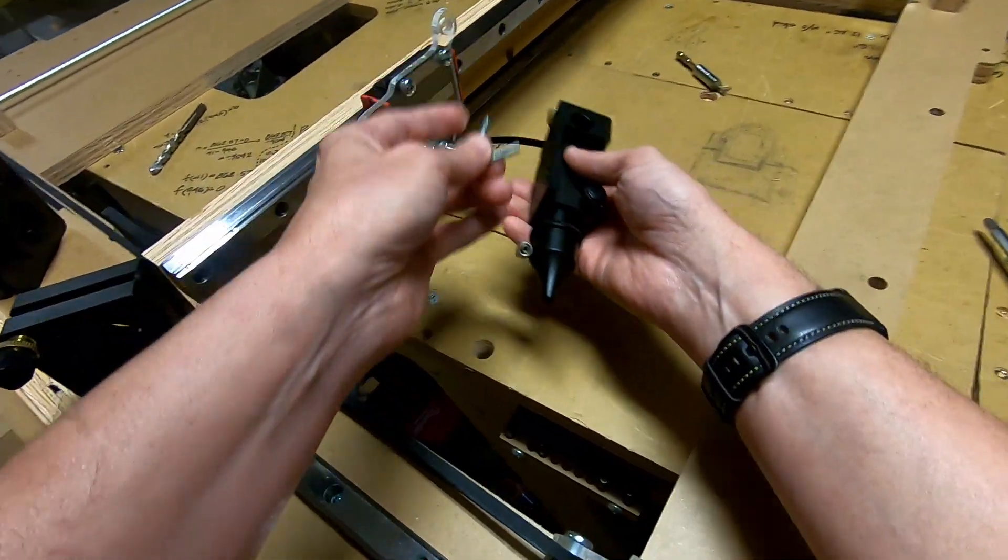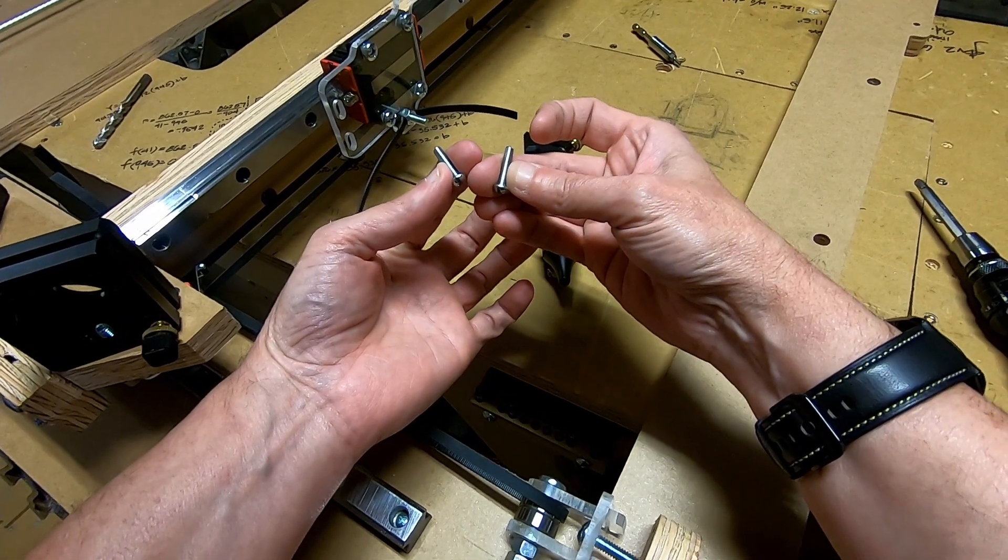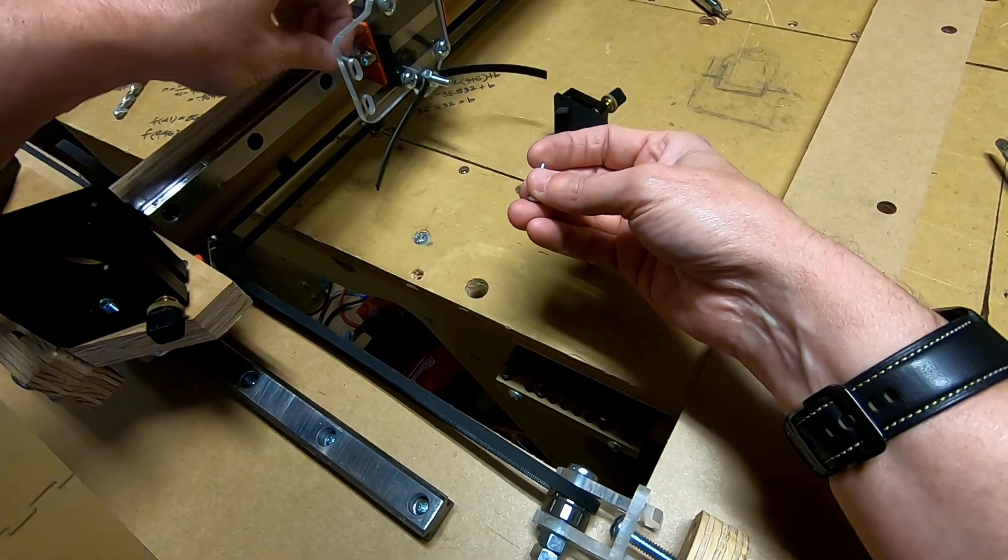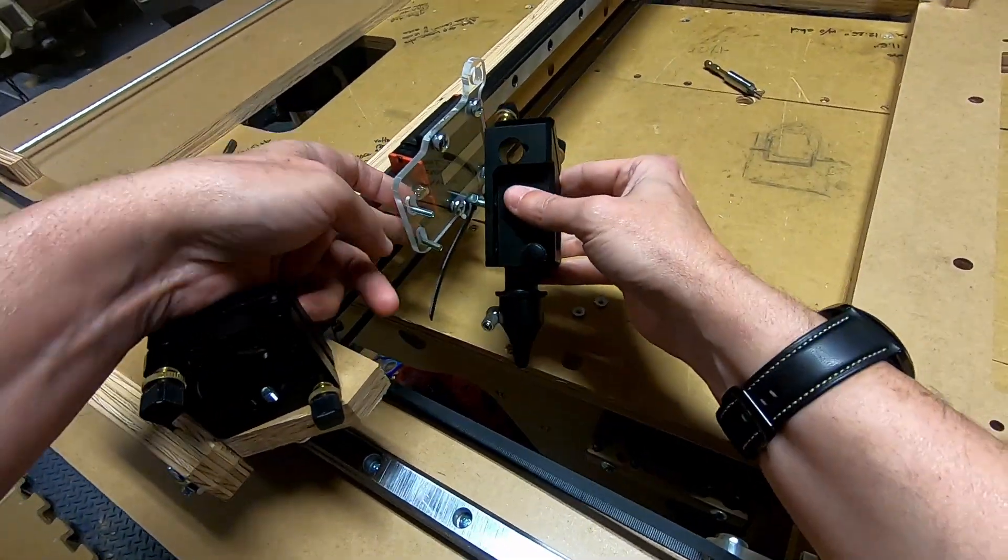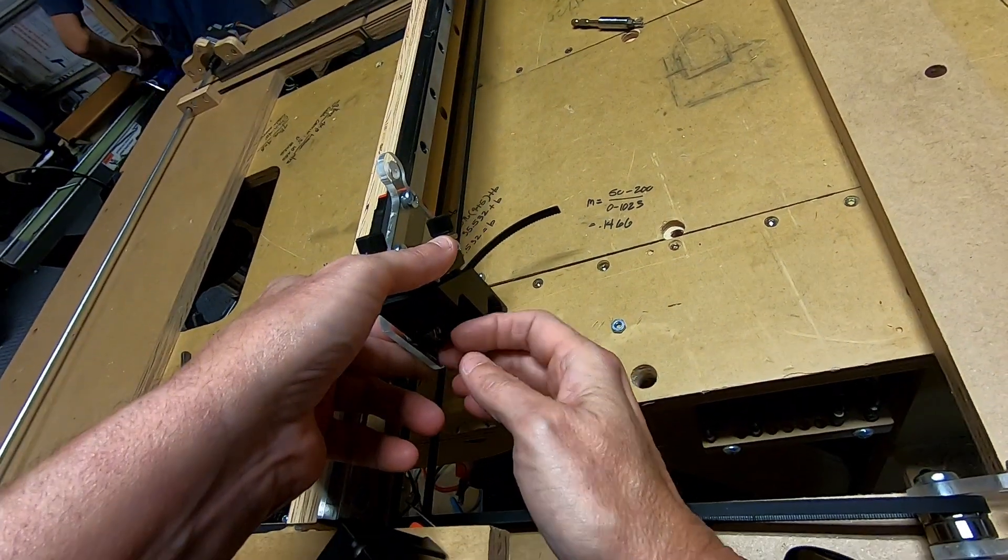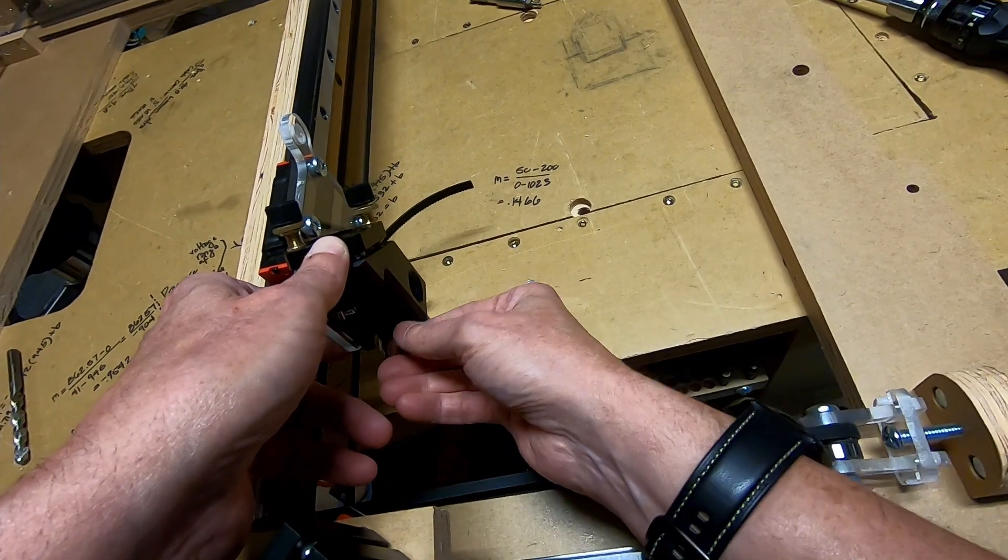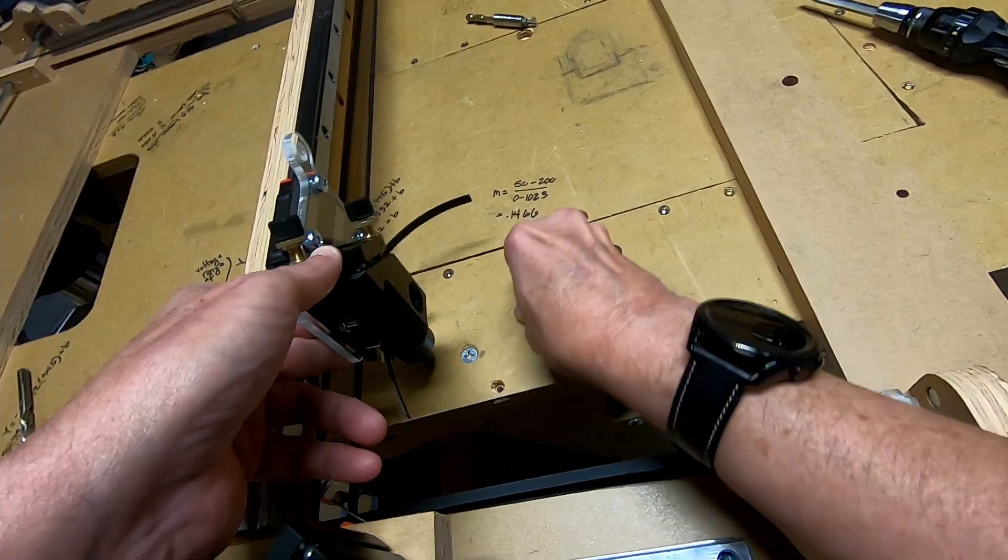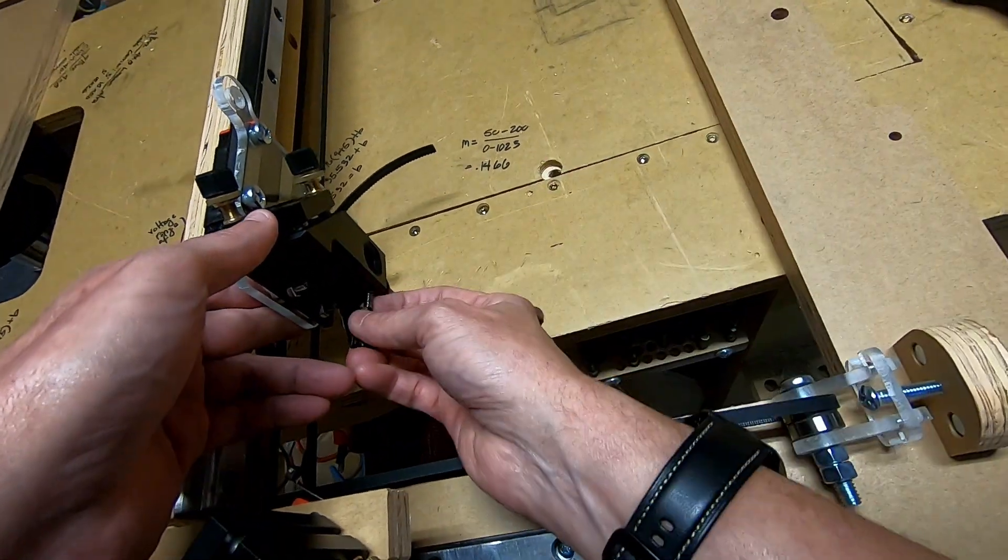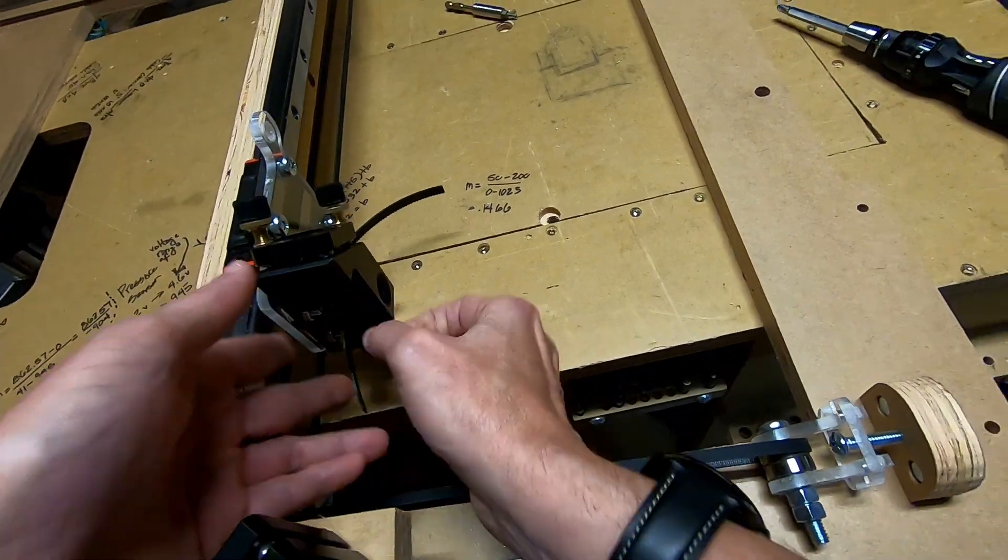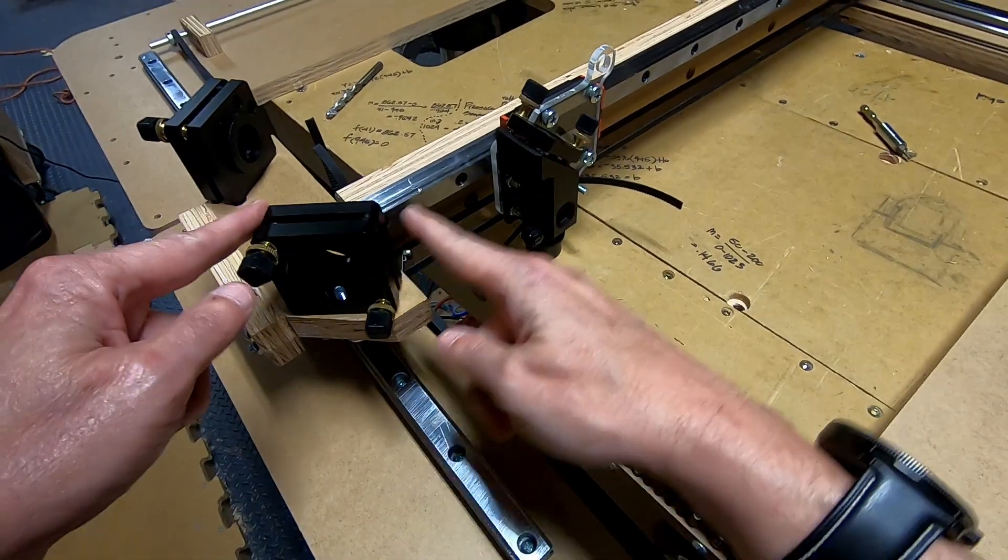In this step we're going to take the nozzle and fasten it to the carriage plate. You'll need two number eight three-quarter inch screws and two number eight nuts. I'm going to remove this portion here just to make it a little easier for me to access this other screw. This part doesn't need to be completely tightened because it still needs to be adjusted up and down to align with the mirrors.